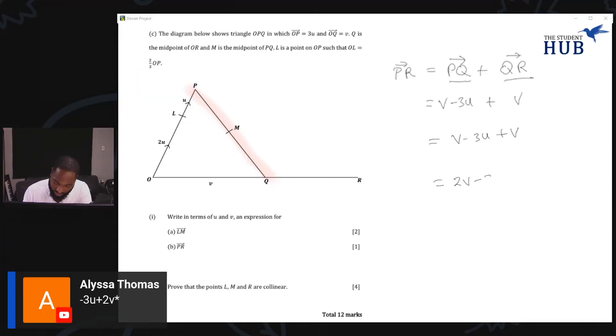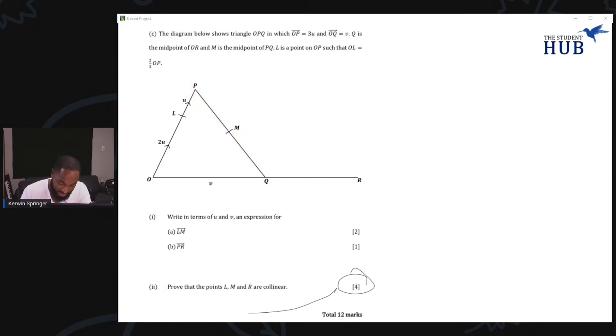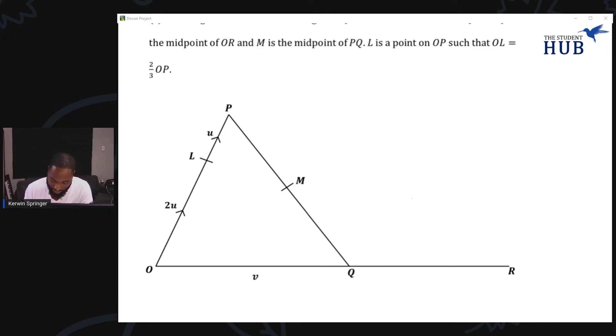PR can be written as PQ plus QR. PQ we just found that to be v minus 3u, so I have 2v minus 3u. Alissa, well done. Now this next question is four marks and we have been asked to show that L, M, and R are collinear. The way to do this is always the same thing. Every time you need to get two vectors on the line. LM I will look at, and then I will look at LR. You need to show that there exists a scalar factor relationship between the two of them.